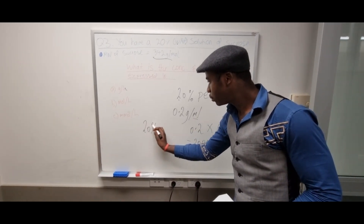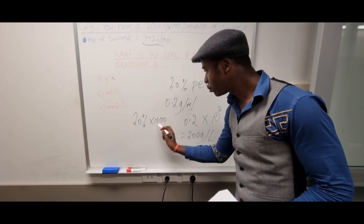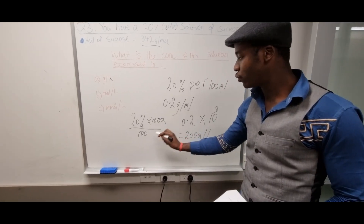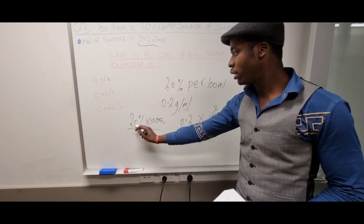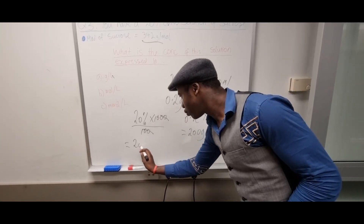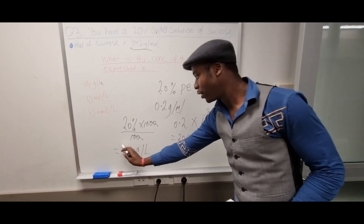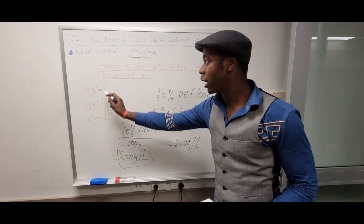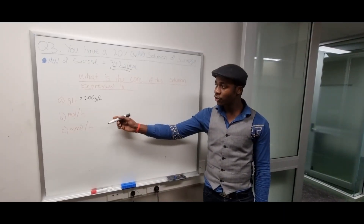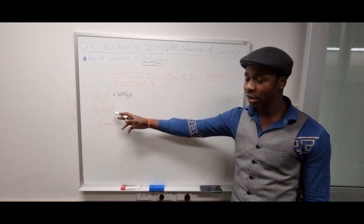Another way to do it: take 20 grams over 100 milliliters, cancel the two zeros, and you get 200 grams per liter. That is the final answer for Part A. Now we continue with Part B, where we have to find the moles per liter.